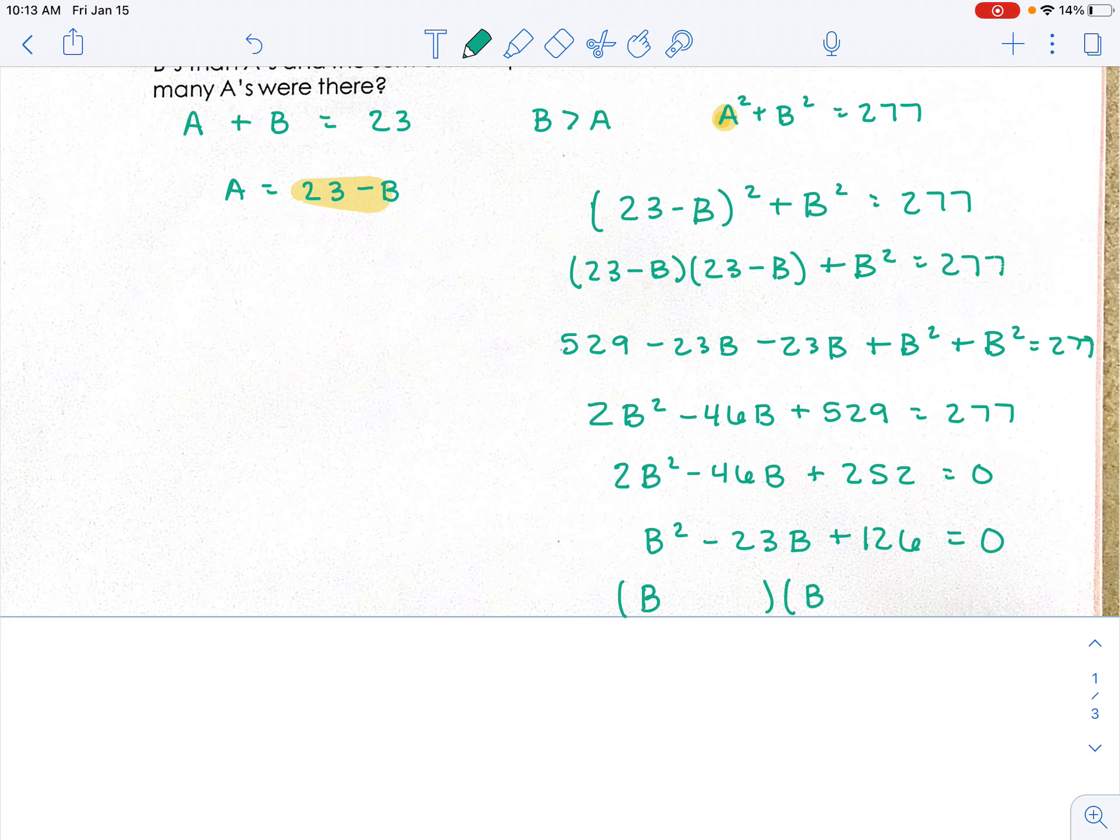I'm like, hmm, 9 and 14 would probably work there. So if I do minus 14 and minus 9, I get B equals 14 or B can equal 9.